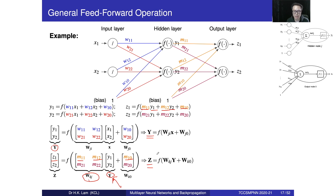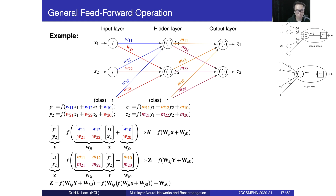This is the compact form of the equation representing the input-output relationship of this neural network. Note that the activation function f in the hidden layer does not need to be the same as the output activation function — it is your choice. Once we have y, plugging it into the z equation gives the final form, which consists of all the matrices: Wkj, Wji, the input x, and the bias matrices.